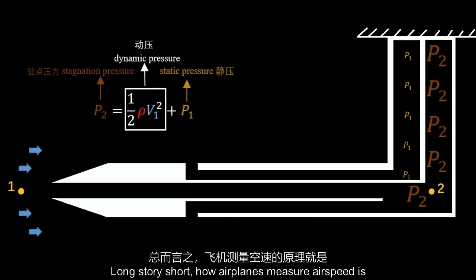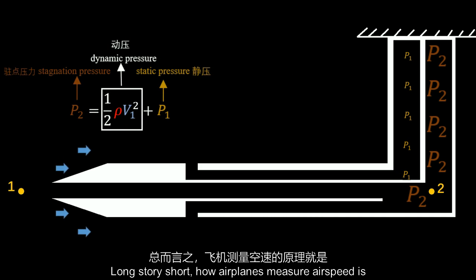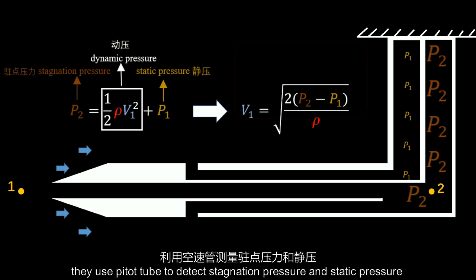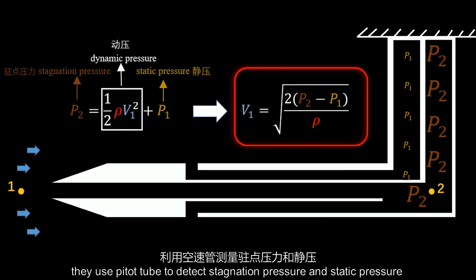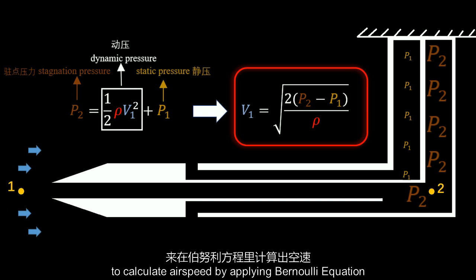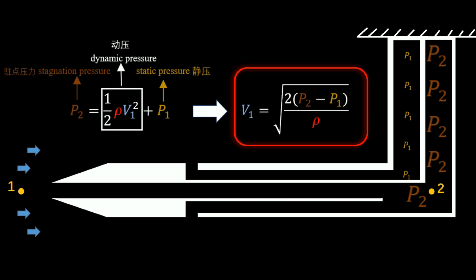Long story short, how an airplane measures airspeed is: they use a pitot tube to detect the stagnation pressure and static pressure to calculate airspeed by applying the Bernoulli equation.